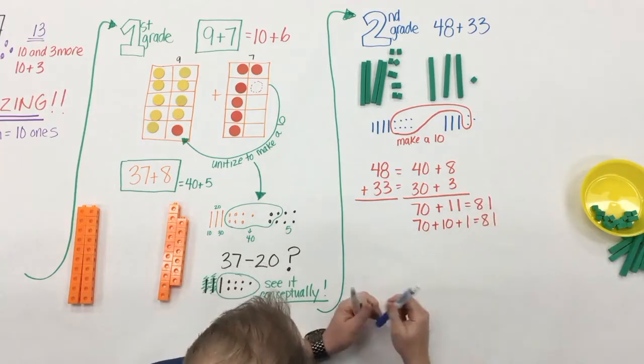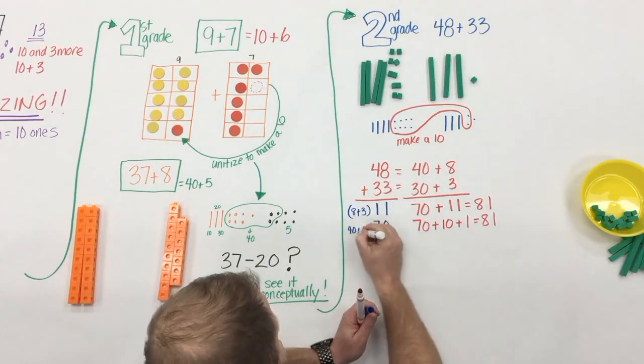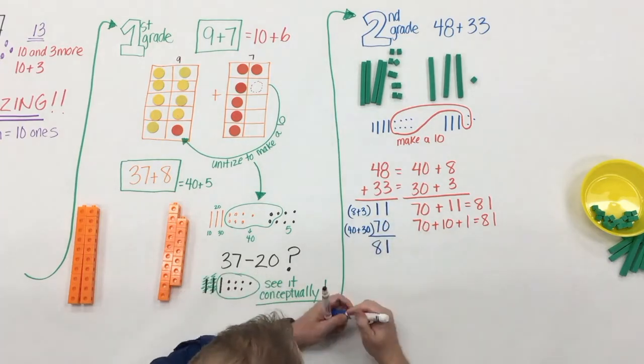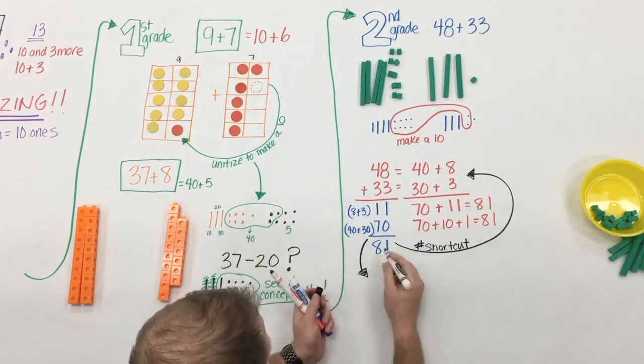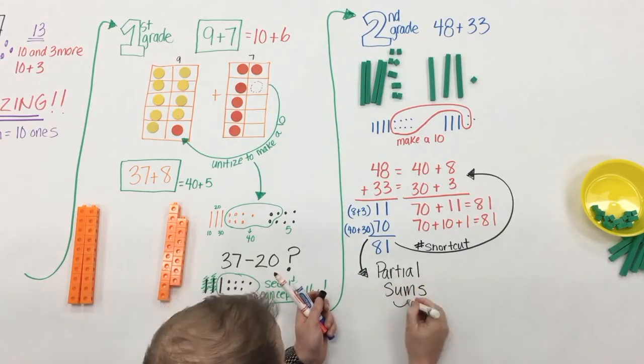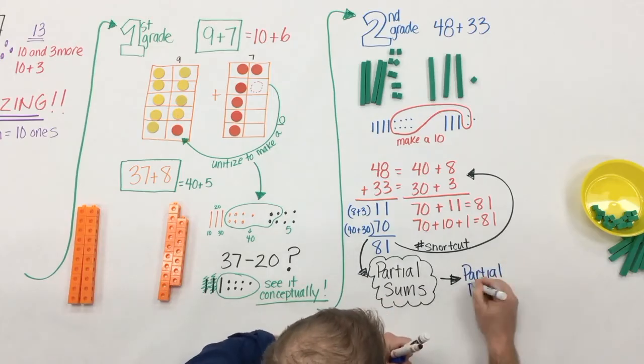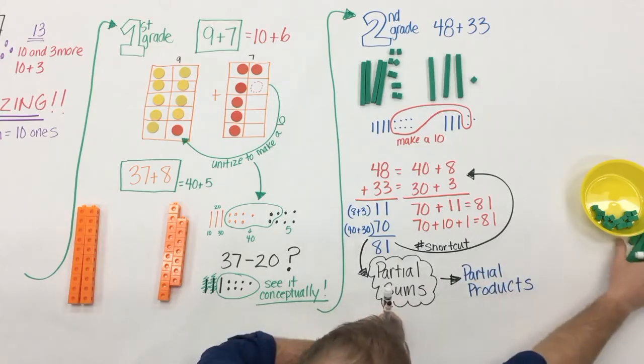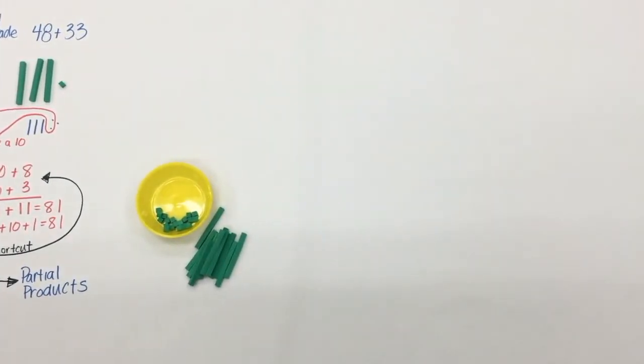Now, it might not be efficient or students might see that it's not efficient to write it out on the side all the time. So to become more efficient, they can begin to use this understanding of partial sums and find a shortcut. Eight plus three is 11. Forty plus 30 is 70. And this understanding of partial sums, well, it leads brilliantly into their understanding that they begin to develop with partial products in fourth grade.